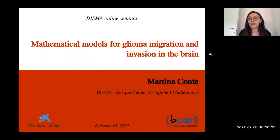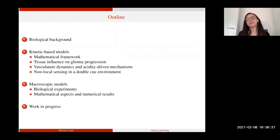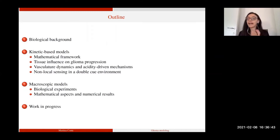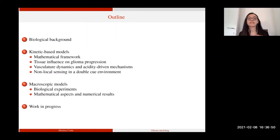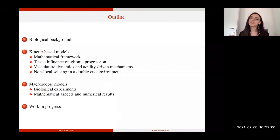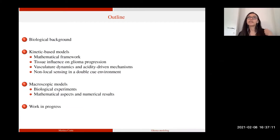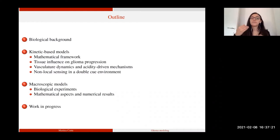Just to give you an idea about the outline for this presentation, we're going to start with a brief biological introduction at the background behind our problem, looking at some mechanisms that we actually wanted to include in the different settings. Then we're going to move to the core of this presentation, which will be about the results we obtained with different kinetic-based models developed during the PhD. First, a brief introduction to the mathematical framework behind, and then we're going to focus on three main settings. The first one was developed with Professor Groppi from the University of Parma, looking at the influence of the tissue structure on glioma progression, and this represents a basis for all the other extensions and further improvements we implemented.